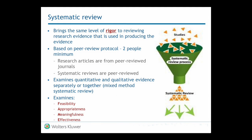The highest level of research is considered secondary research, and this is what we call a systematic review or meta-analyses. What is different about a systematic review and a meta-analyses is that it brings the same level of rigor to the review of all the research studies that have been done on a specific topic, and the same level of rigor to the analysis of all those studies.